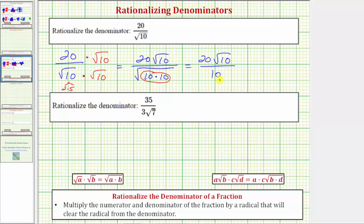So now the denominator is rationalized, but notice how we can simplify further because the numerator and denominator share a common factor of 10. There's one 10 in 10 and two 10s in 20, and because the denominator is now one, this simplifies nicely to two square root 10. Two square root 10 does have a rational denominator because as a fraction it would have a denominator of one.